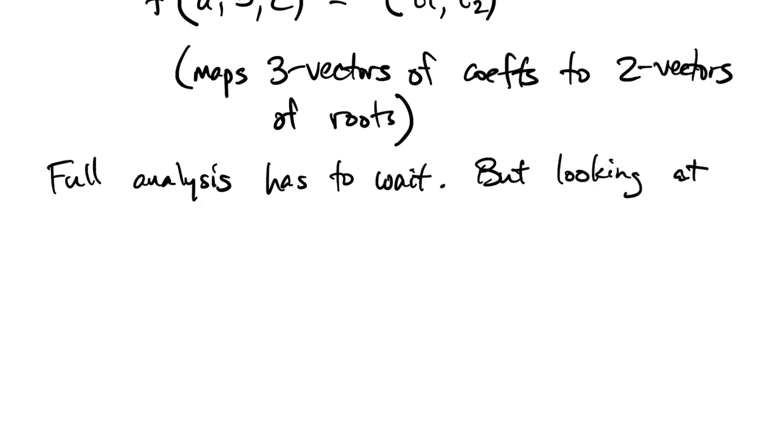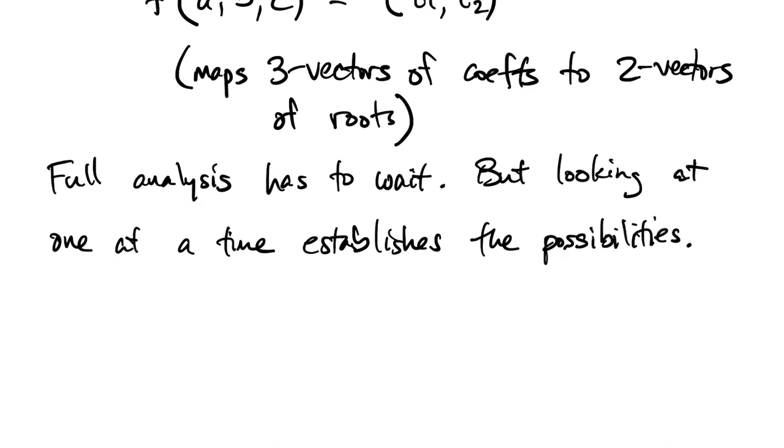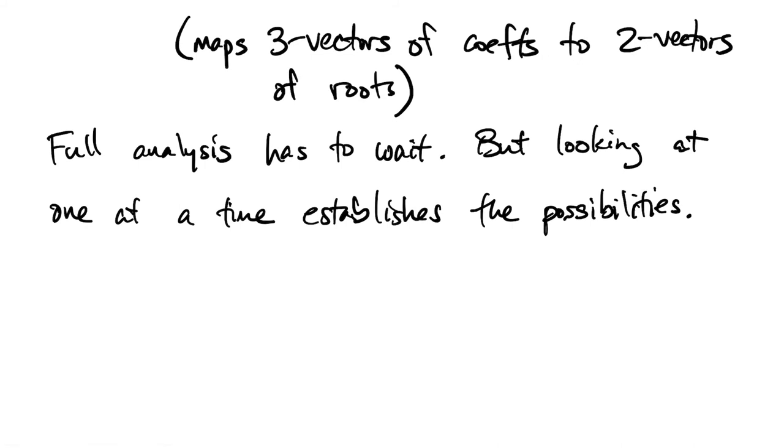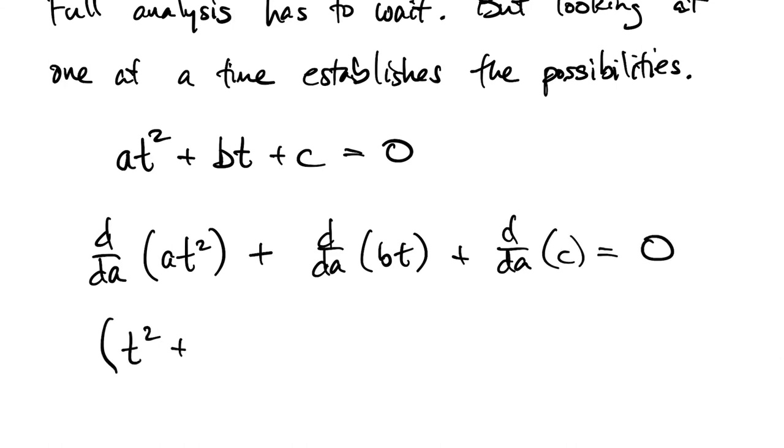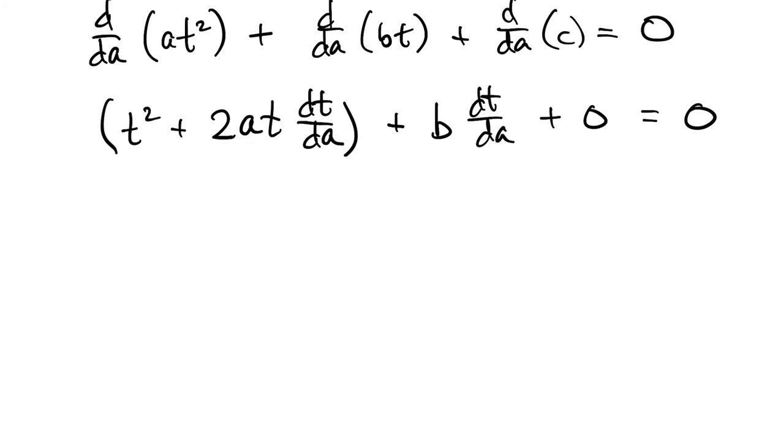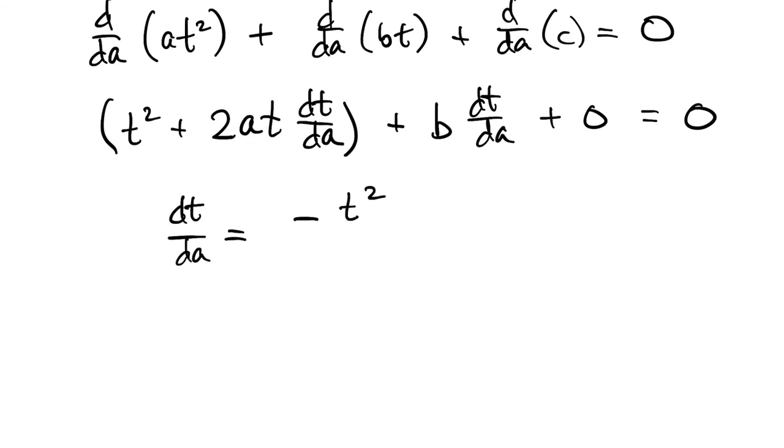Obviously, we might be able to do even worse if we perturb more than one thing at a time. But perturbing one thing at a time at least gives us a lower bound on the badness that can happen. So the roots are defined by setting the polynomial equal to zero. So if we think of a as the only varying coefficient, and the other two are held constant, then we can use implicit differentiation of this equation to find the variation of t with respect to a. So we apply the product rule and the chain rule.